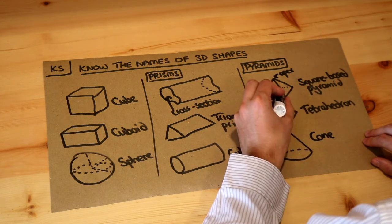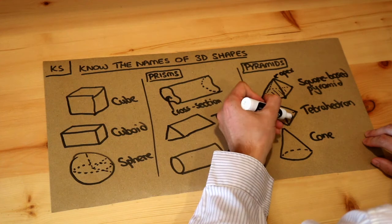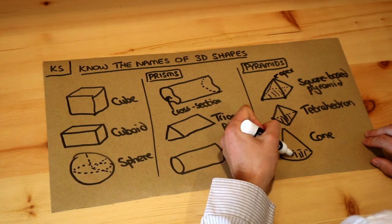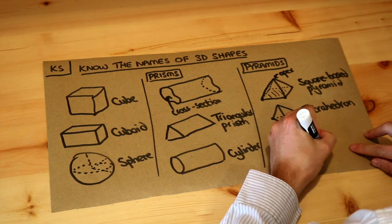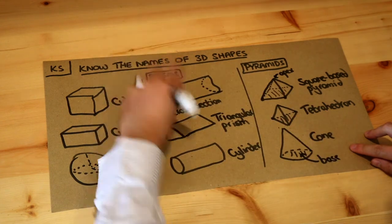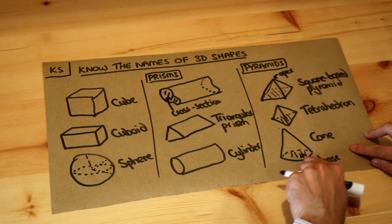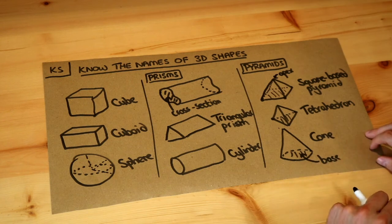And then we just label the bottom of this. The bottom here, that is known as the base of the pyramid. Just as this shape here is known as the cross section of the prism, this bottom bit of the pyramid is known as the base of the pyramid.